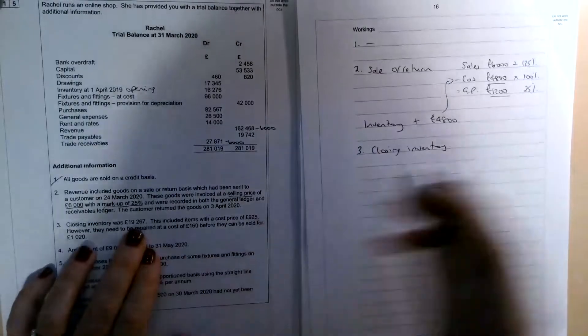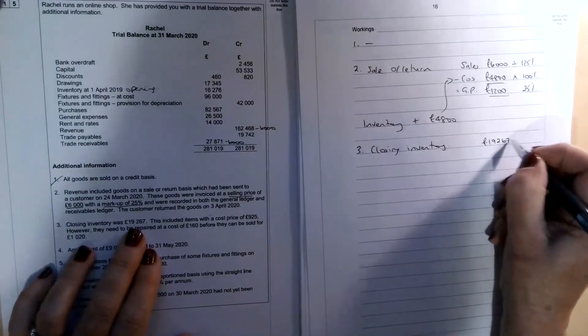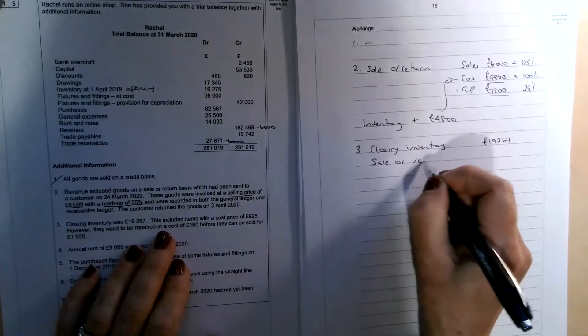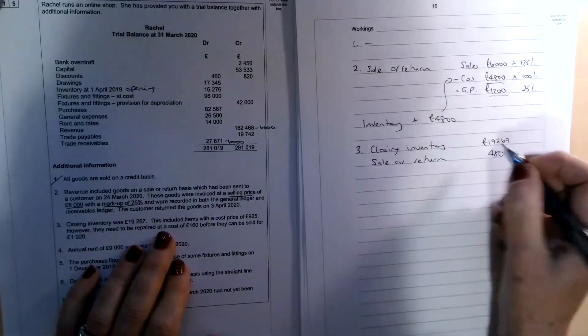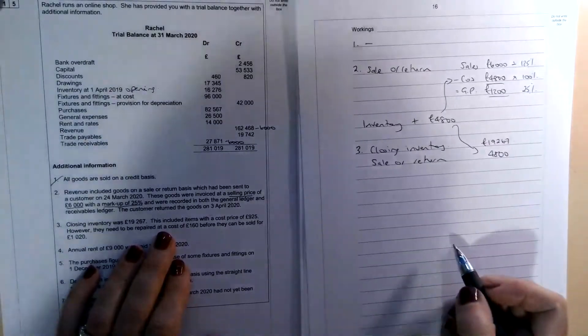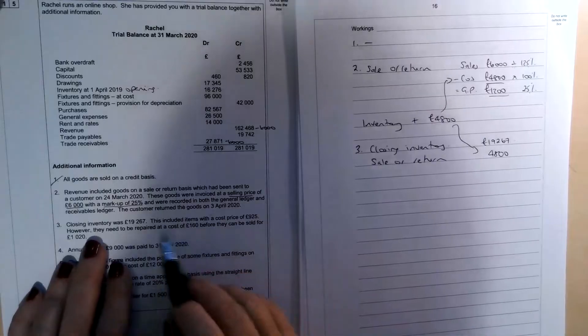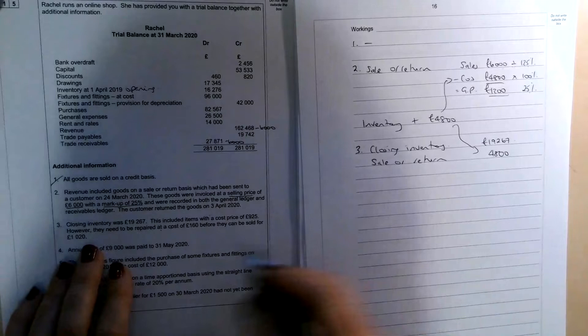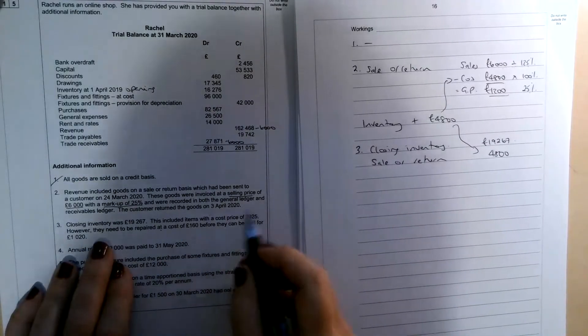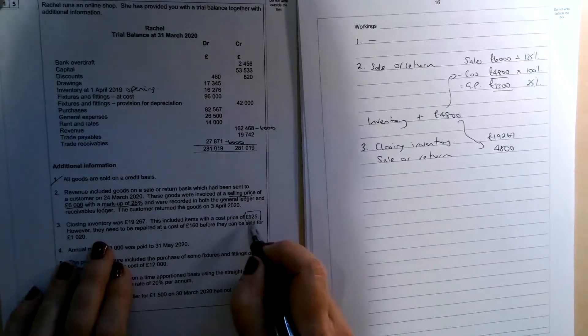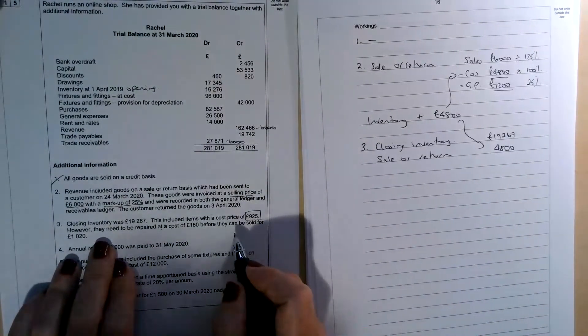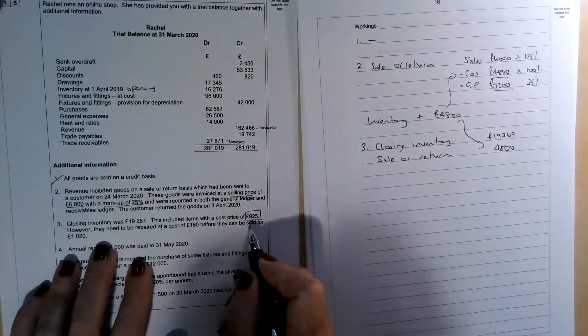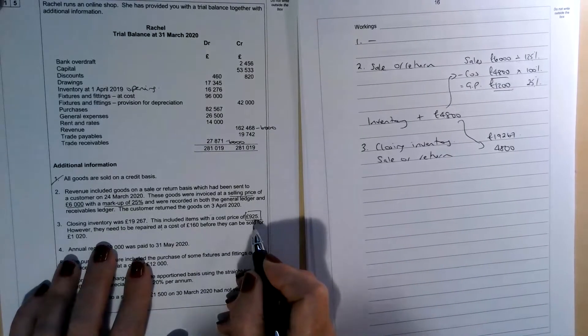So the original figure it tells us was 19,267. We need to add the sale or return to that. So let's do that before we forget. So that £4,800 is going to be added onto the closing inventory figure. And then we've got goods that have been damaged and need to be repaired. So we need to calculate the net realisable value. So they originally had a cost price of £925. So when we're trying to deal with this, taking the lower of cost and net realisable value, always ring fence the cost price. Never be tempted to do anything with that. It's a factual amount. It's what's been paid for the goods. The thing we have to calculate, though, is the net realisable value.